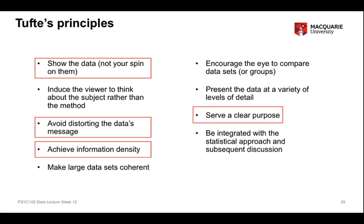The third principle is to achieve information density, which means to use the space on your graph efficiently to convey as much information as possible — without making the graph so cluttered that it's difficult to read. Finally, graphics should serve a clear purpose. I've been in conversations around journal manuscripts where someone says we should have a graph, a scatter plot or an error bar chart. The problem with that idea is that yes, graphics are visually interesting and can make a paper look more attractive, but they still need to serve a very clear purpose rather than just being there for their visual appeal.